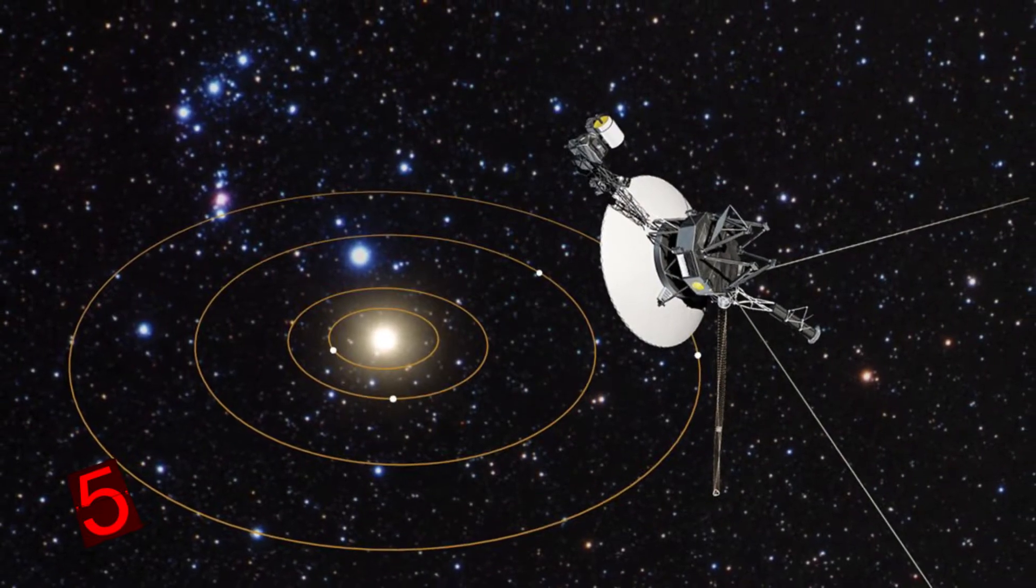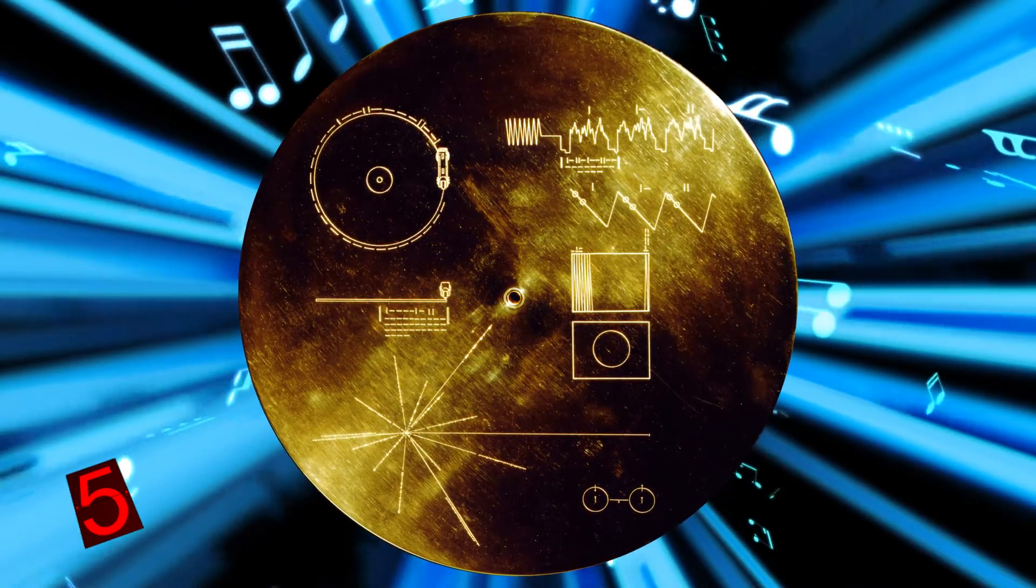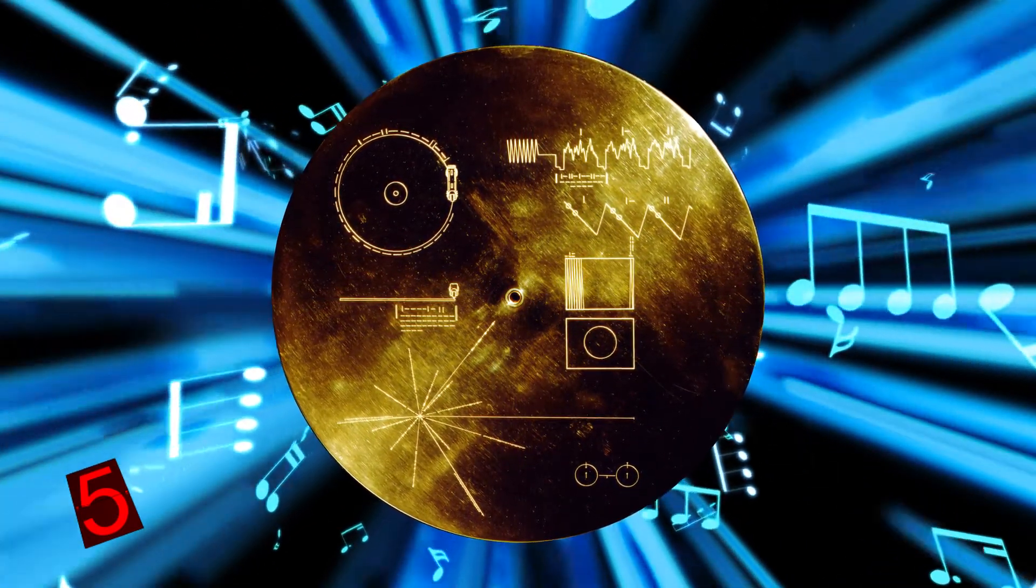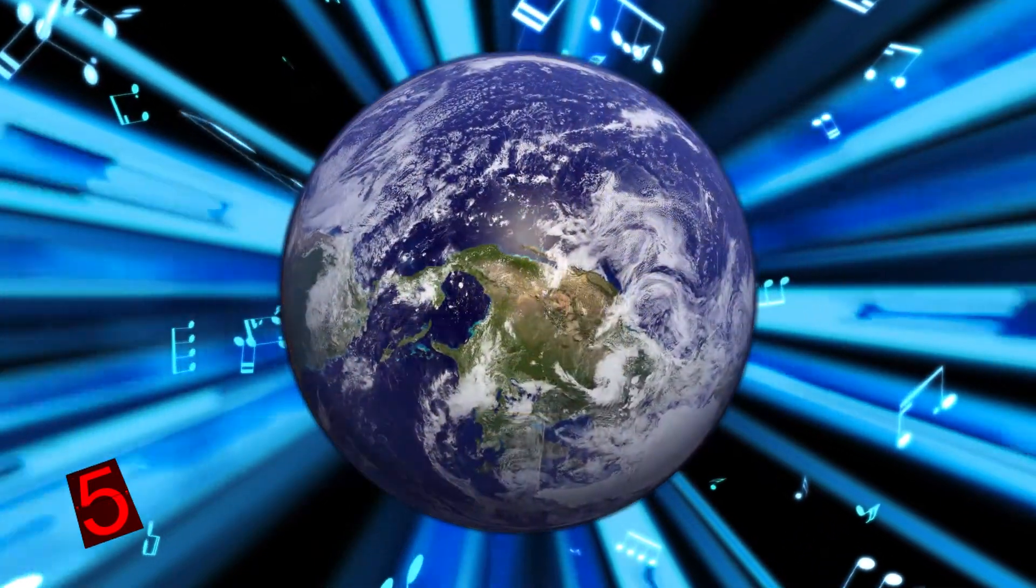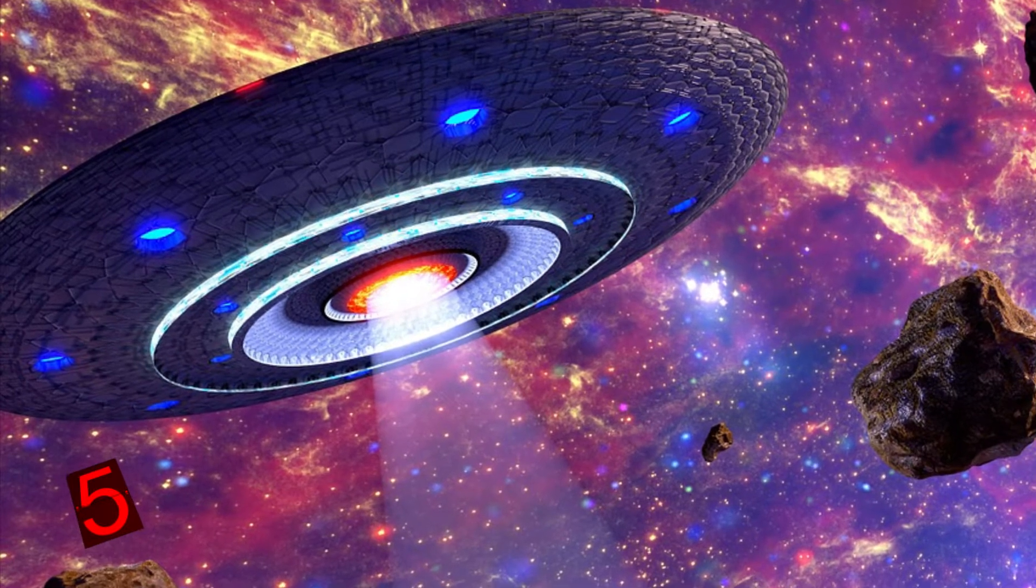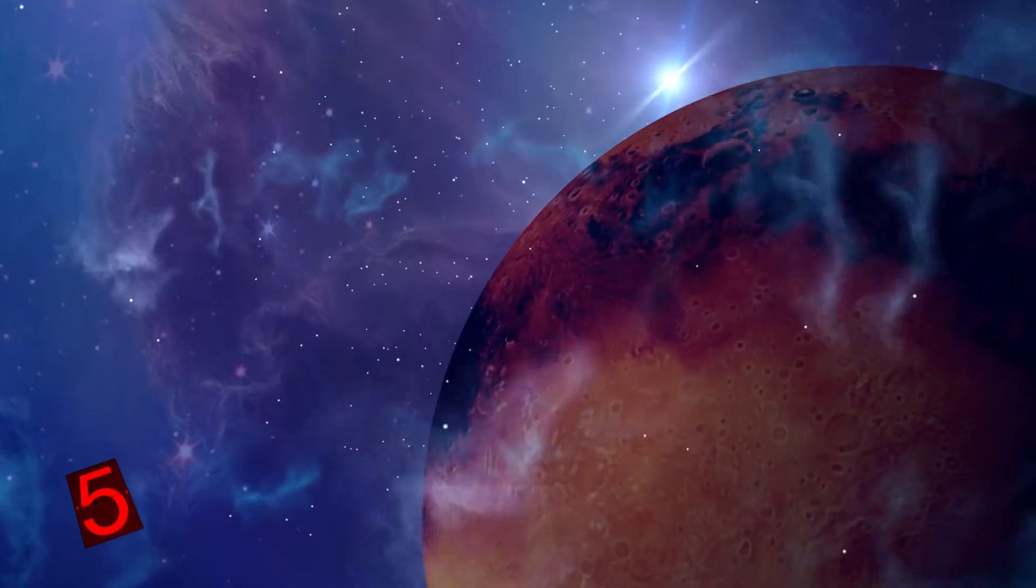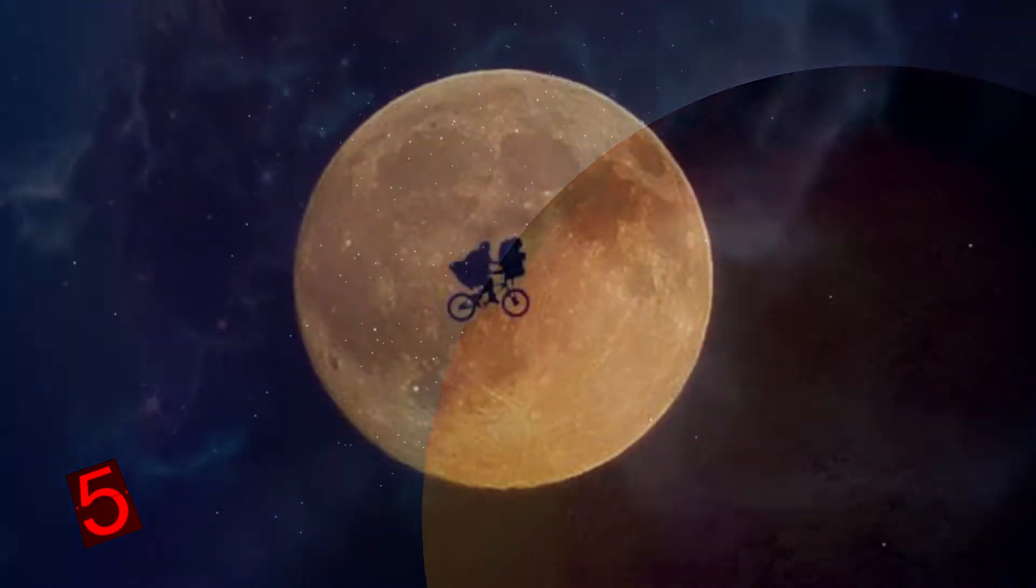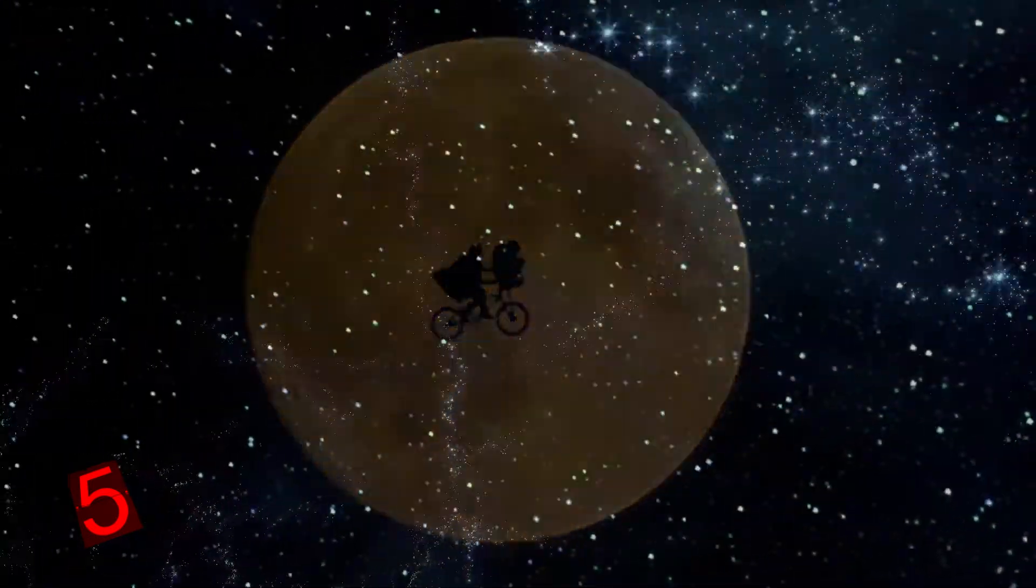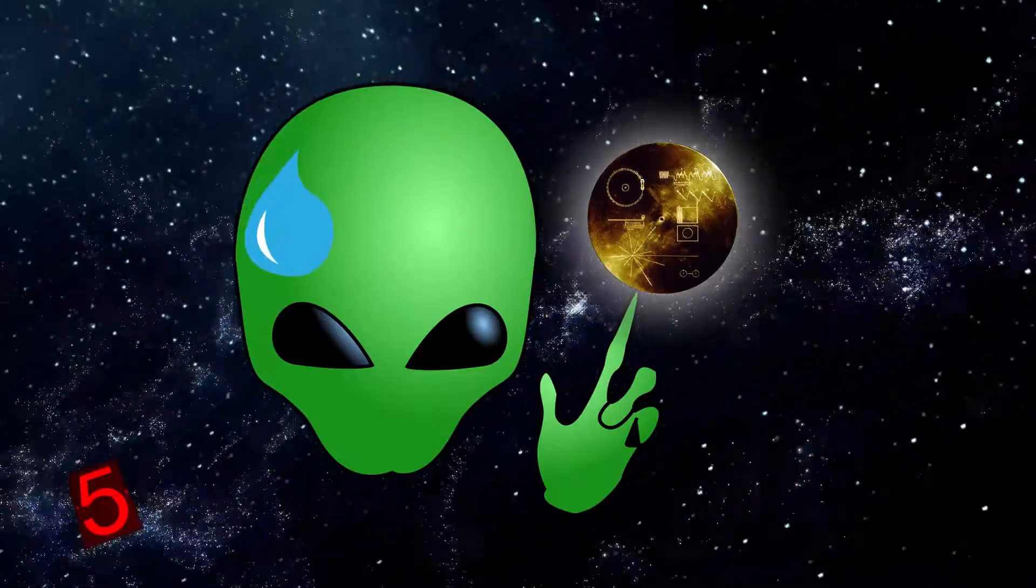But the Voyager robotic probes aren't just pieces of scientific equipment. Each one carries a gold-plated, audiovisual disk that contains greetings in 55 languages, music, pictures of Earth, and scientific information. In the event that they are ever found by intelligent lifeforms, they are a message from us to them. Perhaps one day, in thousands, millions, or even billions of years from now, intelligent lifeforms may one day find the echo of humanity floating around in space. And they'll probably wonder while we're shooting record players at them.